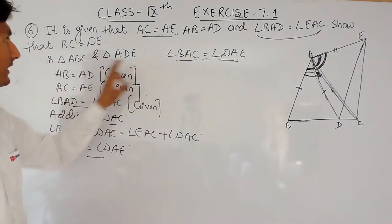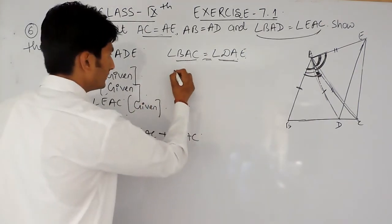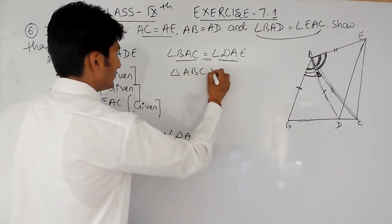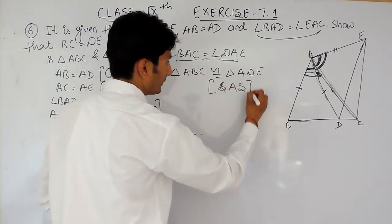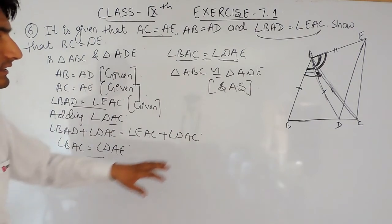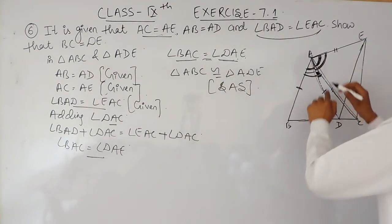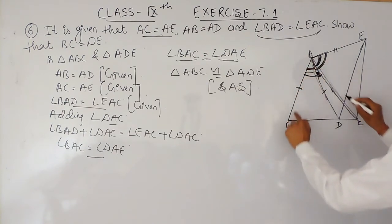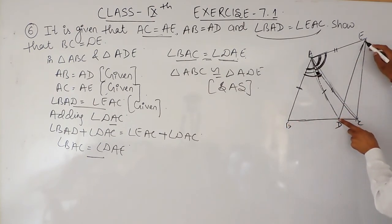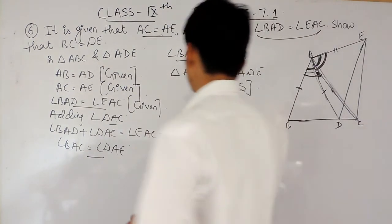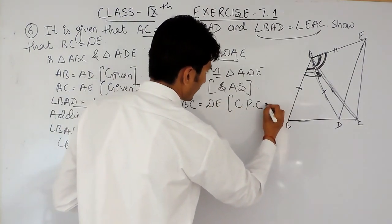We have proved that two sides and the included angle in both triangles are equal. So by Side-Angle-Side, we can confirm that triangle ABC is congruent to triangle ADE — this is because of the SAS property. Since the two triangles are congruent, by CPCT these two corresponding sides must also be equal.